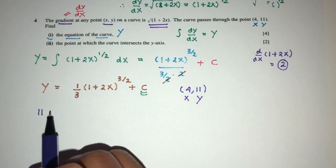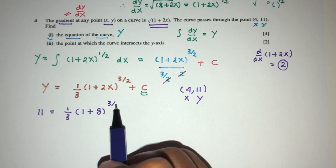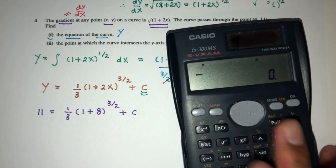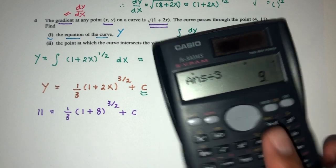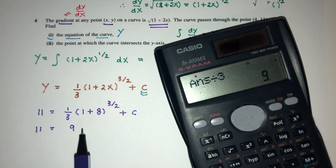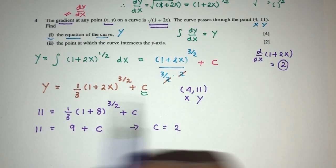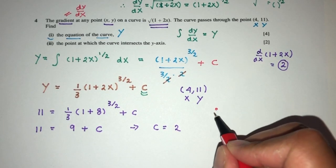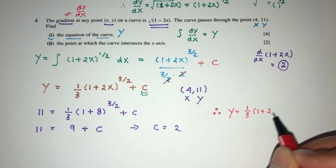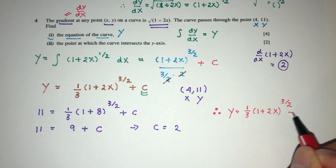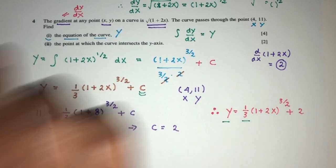Y will be 11 when the value of x is equal to 4. So 2 times 4 here is 8 to the 3/2 plus C. So 1 plus 8 is 9 to the power 3/2. That will be this, divide by 3, that will be 9. So 11 is equal to 9 plus C. So finally, C has to be the value of 2. So let's conclude by conclusion, y has to be 1/3 times 1 plus 2x to the 3/2 plus the value of C which is 2. So this is the value of y that we have to show for part 1.